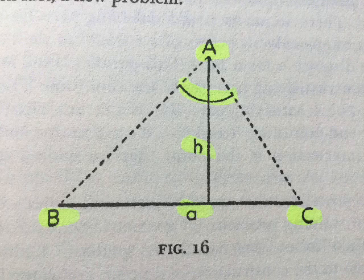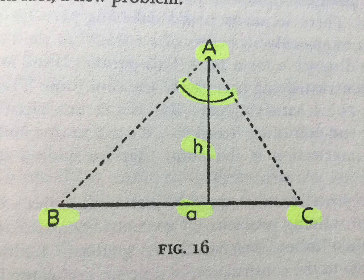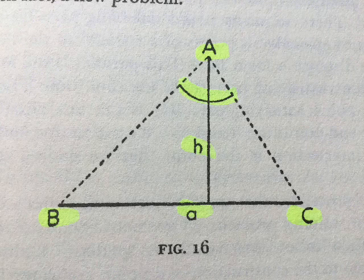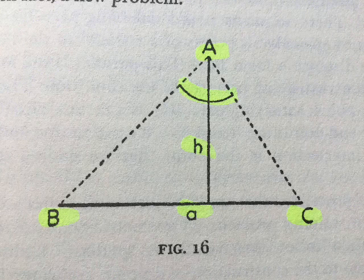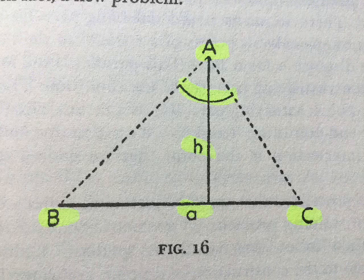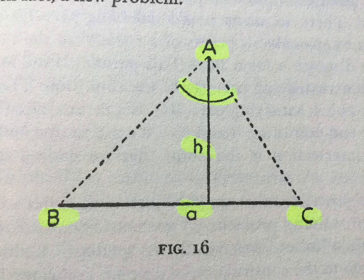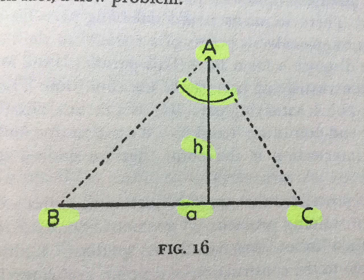5. Keeping the data. We may try to introduce some useful and more accessible new unknown. Such unknown must be obtained from the original data, and we have such an unknown in mind when we ask: Could you derive something useful from the data? Let us observe that two things are here desirable: 1. The new unknown should be more accessible — that is, more easily obtainable from the data than the original unknown. 2. The new unknown should be useful — that is, it should be capable of rendering some definite service in the search for the original unknown.